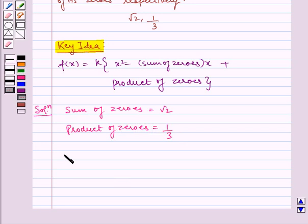Now, by key idea, let us frame our polynomial, i.e., f of x is equal to k into x square minus sum of zeros is equal to root 2, root 2x, plus product of zeros is equal to 1 by 3, so plus 1 by 3.